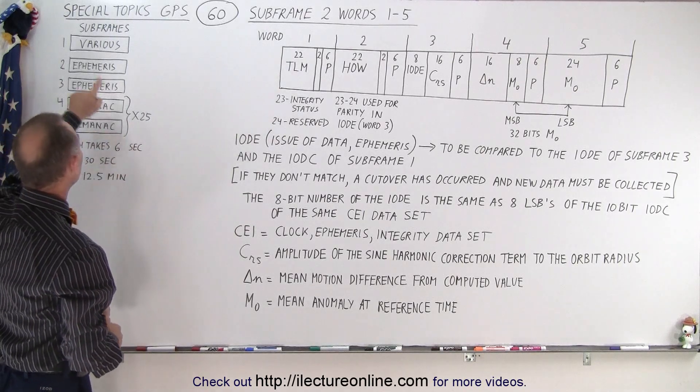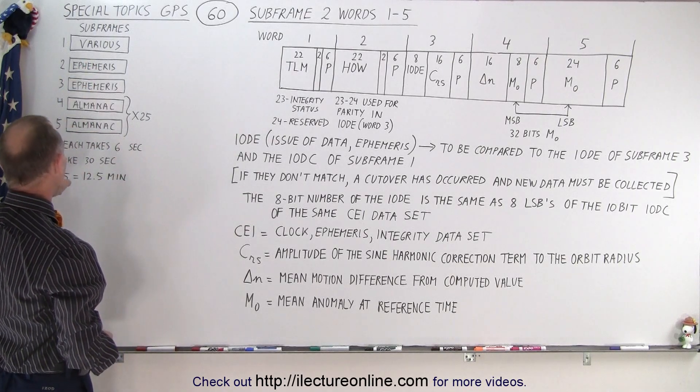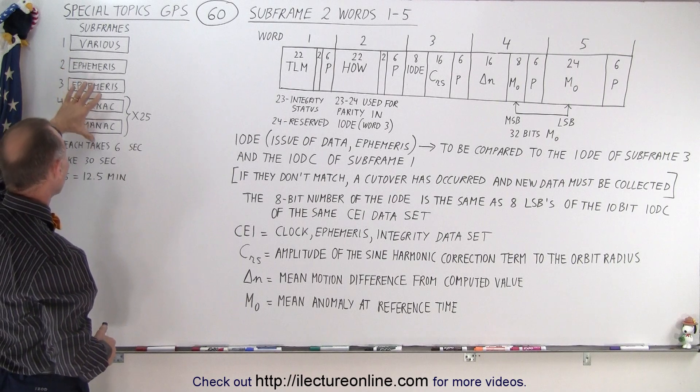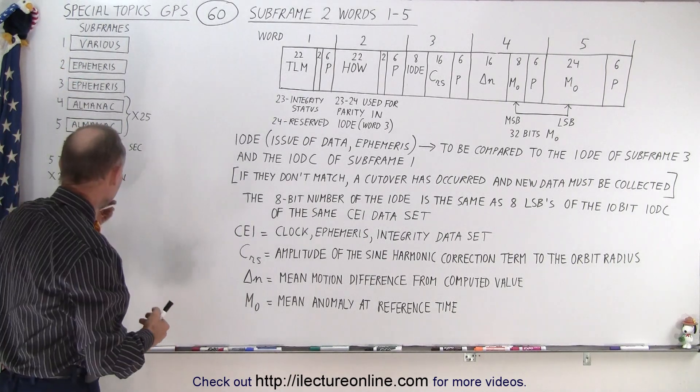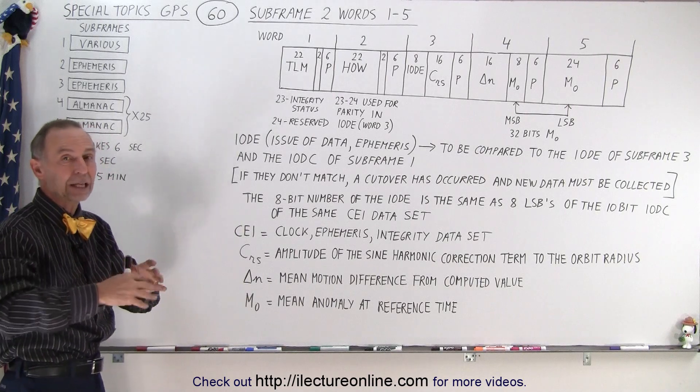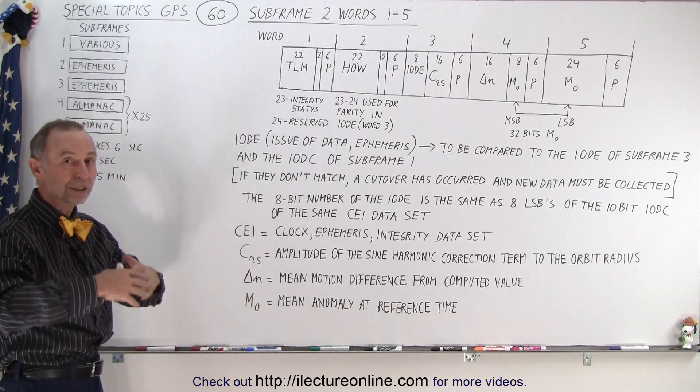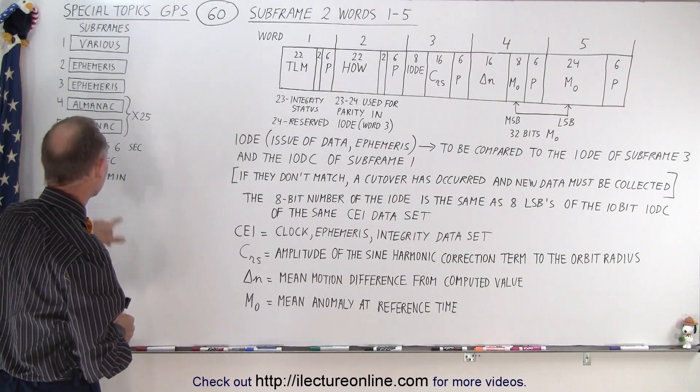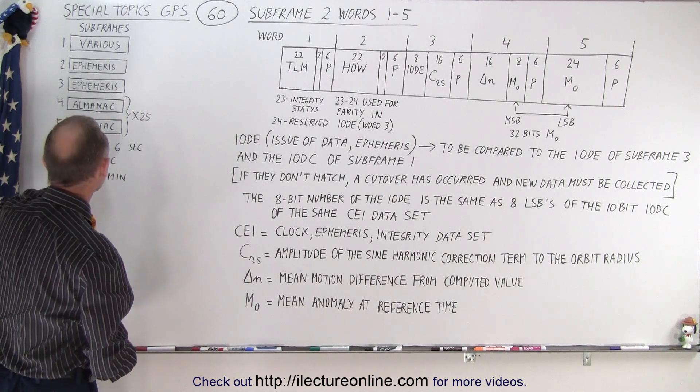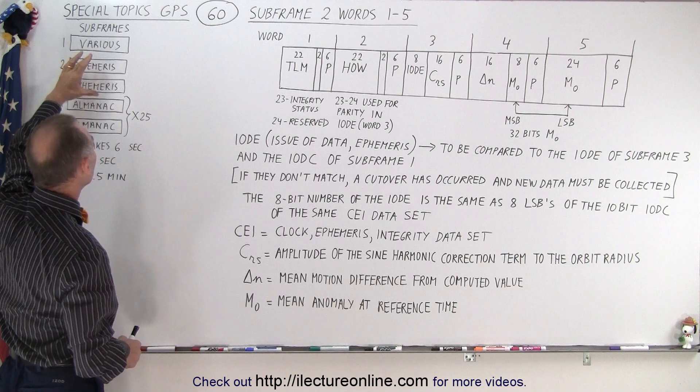Now it takes 6 seconds for each subframe to be sent so therefore it takes 30 seconds for all 5 subframes. And of course since we need 25 for all the Almanac data it takes 12 and a half minutes to get all of the Almanac data of the entire constellation of all the satellites, GPS satellites in the sky. But notice that every 30 seconds we get ephemeris data updates.